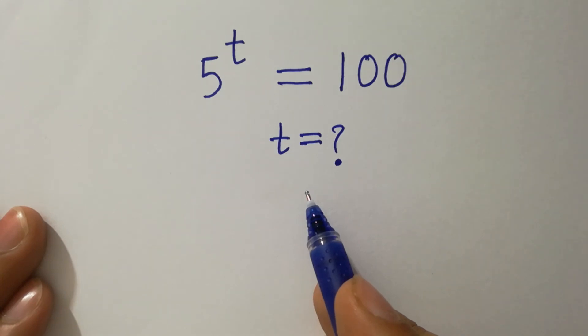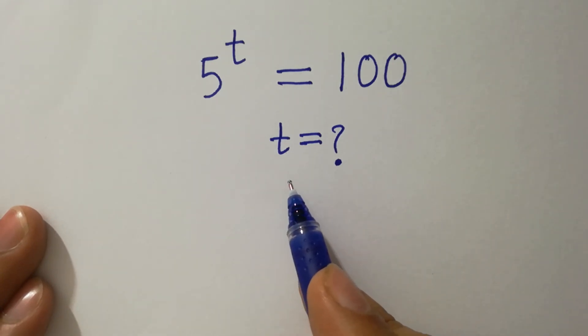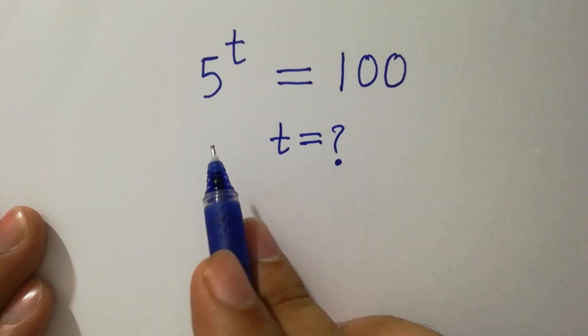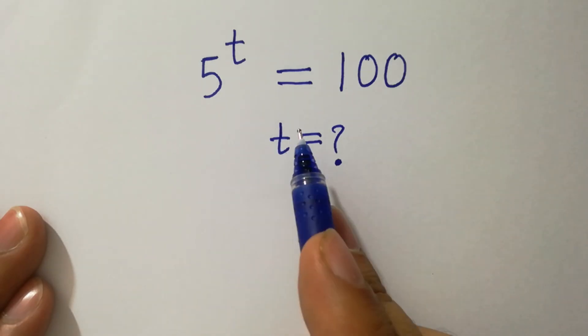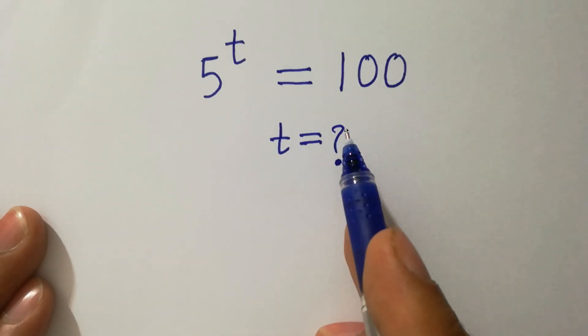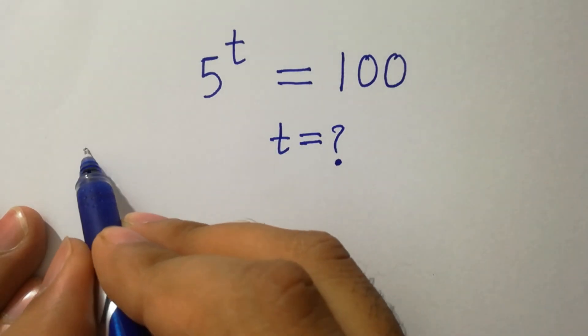Hello friends, find the value of t if 5 to the power t equals 100. Let's have a solution.